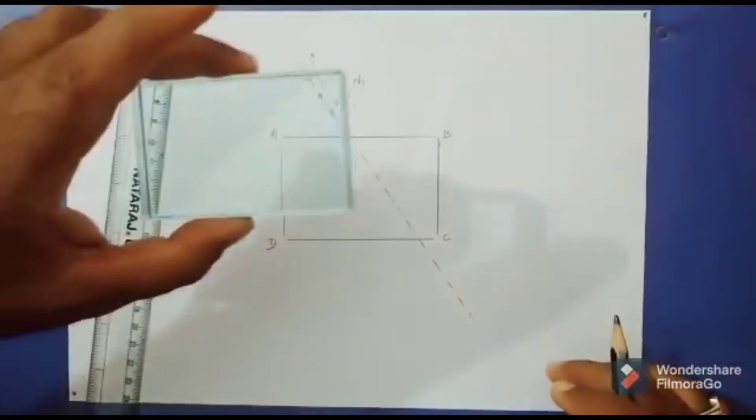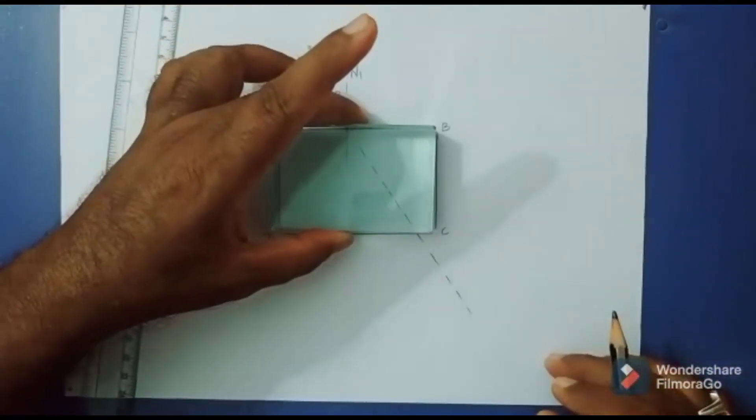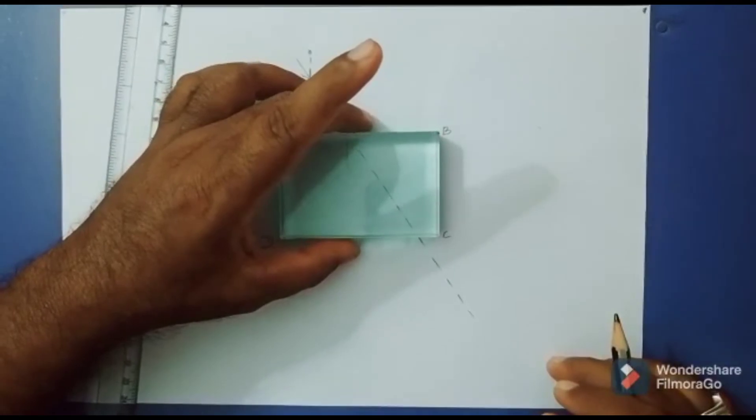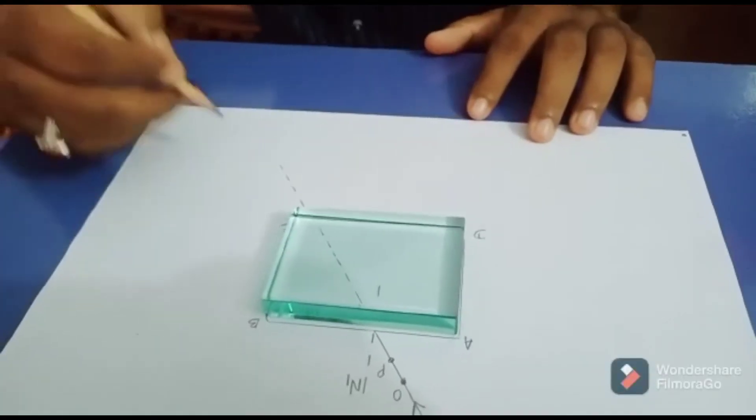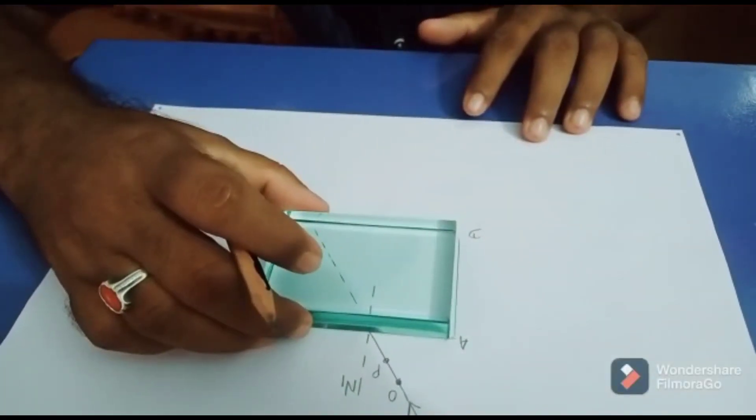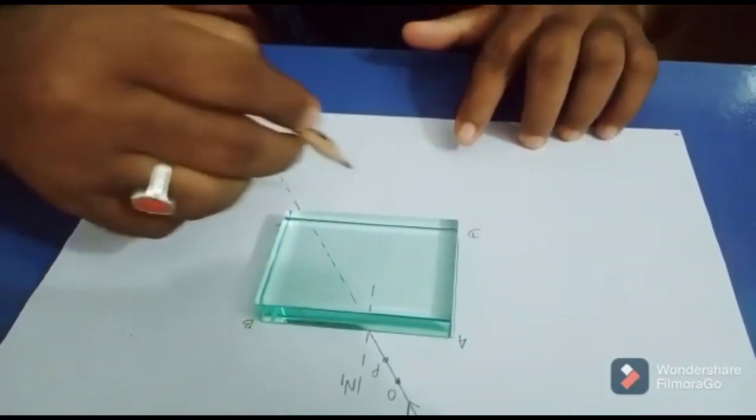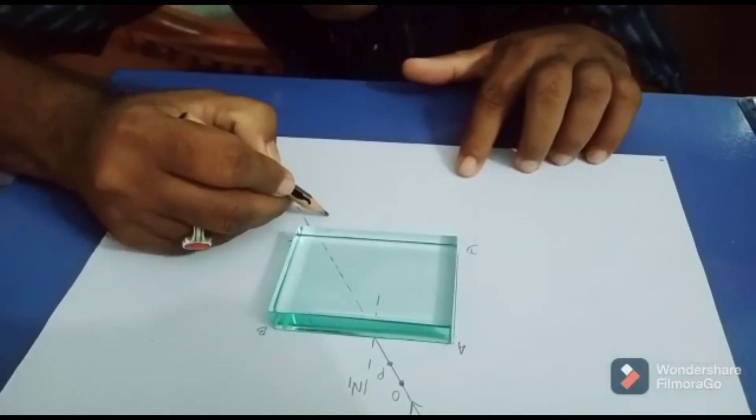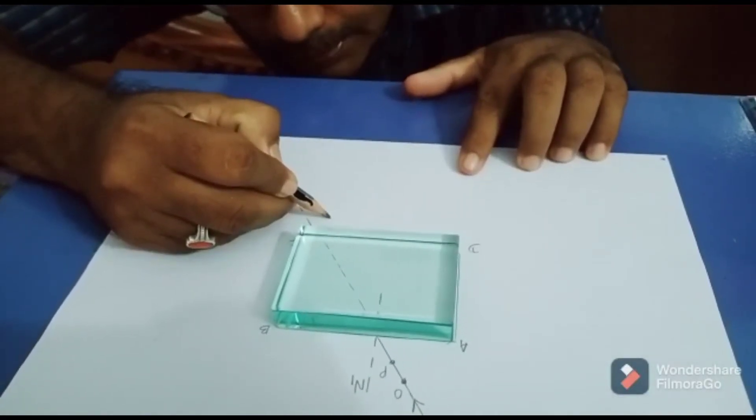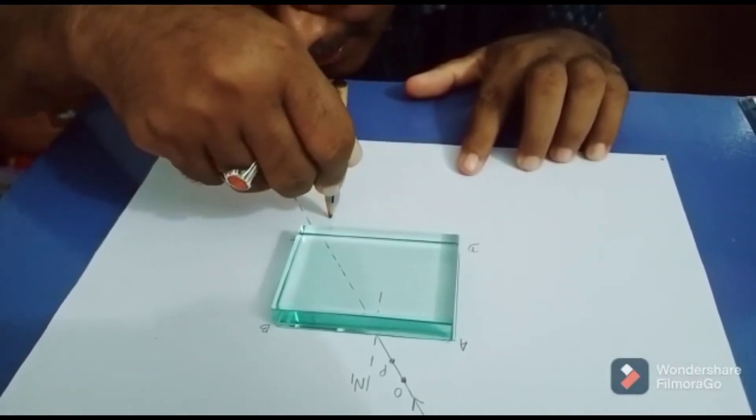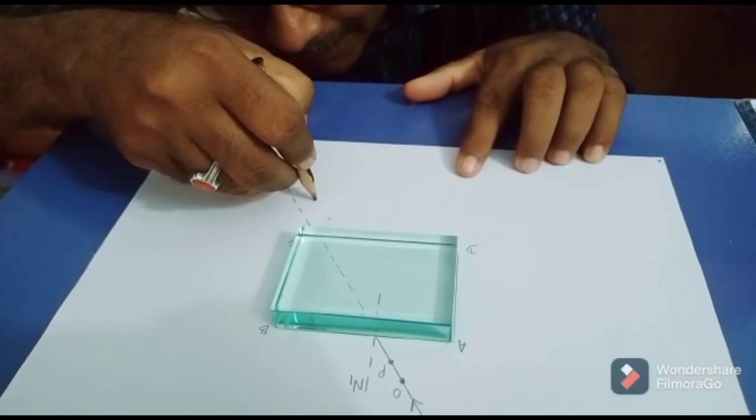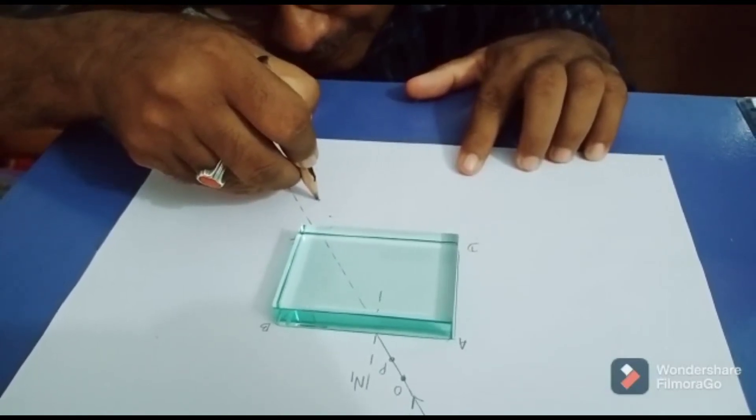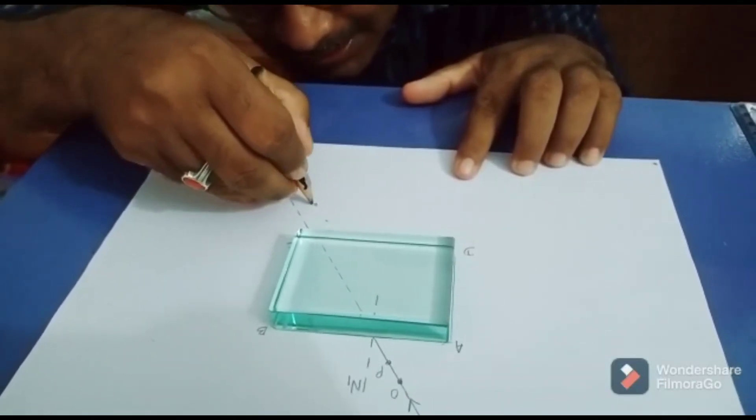After placing back the glass slab, you need to look through CD side and place two more pins which exactly coincide with the incident ray or the pins which are placed on the incident ray.